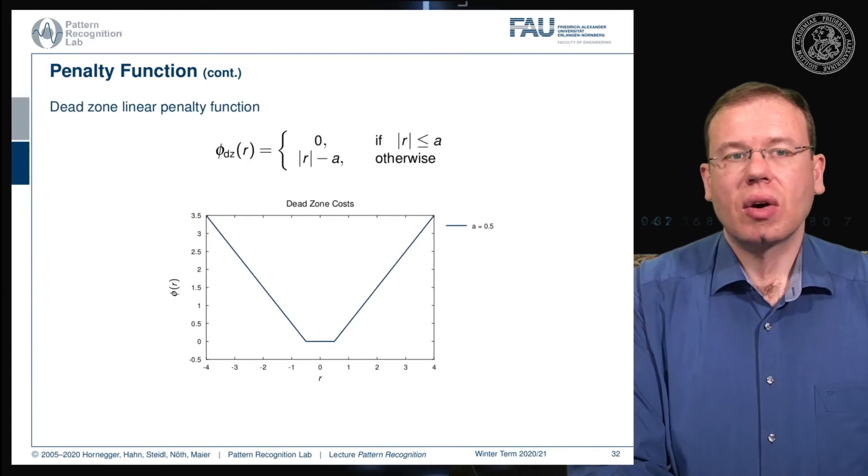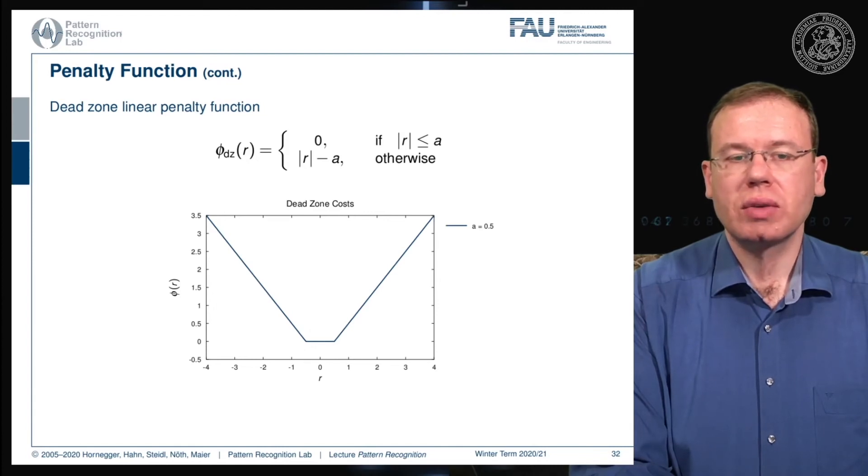There's also the dead zone linear penalty function. Here you essentially start introducing zones that do not receive any penalty. Everything in a closed region in the vicinity to 0 doesn't cause any penalty. Only if you move away from there you introduce a penalty, and of course you can vary this function as well.